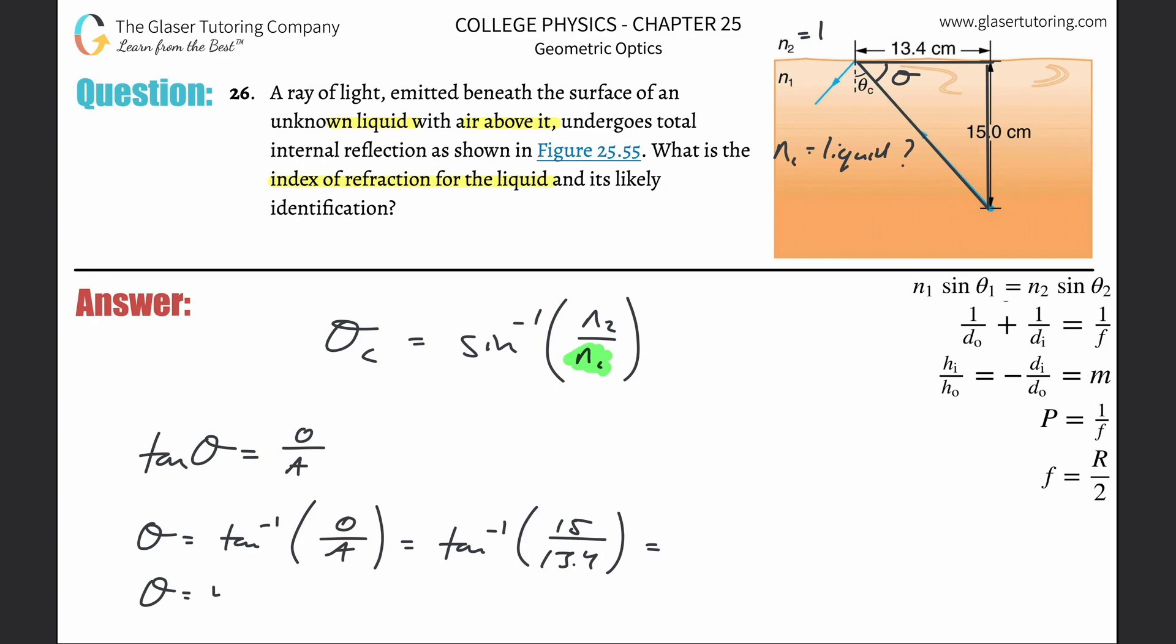So if that theta value is 48.2 and I want to find this piece, but I know if I extend this line down, this creates a right angle in here. Can I just take 90 and subtract the 48.2 to find my critical angle? Sure. 41.8 degrees. This is indeed now my critical angle. That's what I needed to know. Now I can solve.